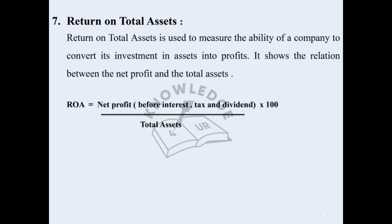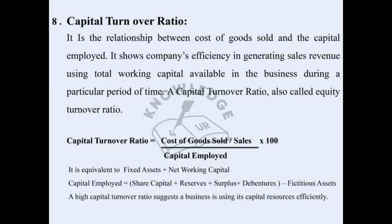The next is Capital Turnover Ratio. It is a relationship between the cost of goods sold and the capital employed. It shows the company's efficiency in generating sales revenue using total working capital available in the business during a particular period of time. It is also called the Equity Turnover Ratio.